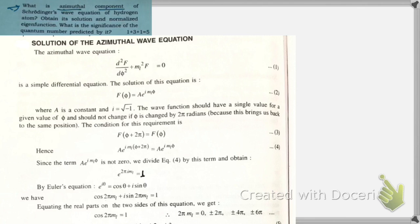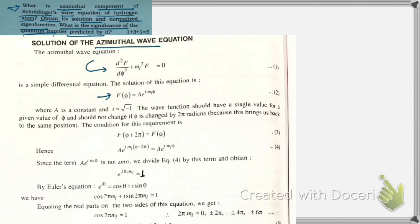The next part of question number nine asks: what is the azimuthal component of the Schrödinger wave equation of the hydrogen atom? Obtain the solution and normalize the eigenfunction. What is the significance of the quantum number predicted by it? We have already discussed all three parts of the Schrödinger equation obtained for the hydrogen atom in part three. Here we focus on one of those three parts and find its solution.